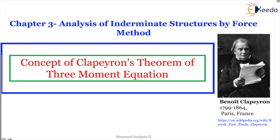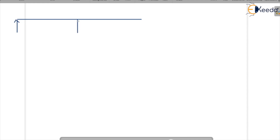Coming to the concept, we are aware that we have seen many beams. Beams which have more than one span are called continuous beams. This beam has a number of supports and spans. Continuous beams are very common in bridge and building structures.